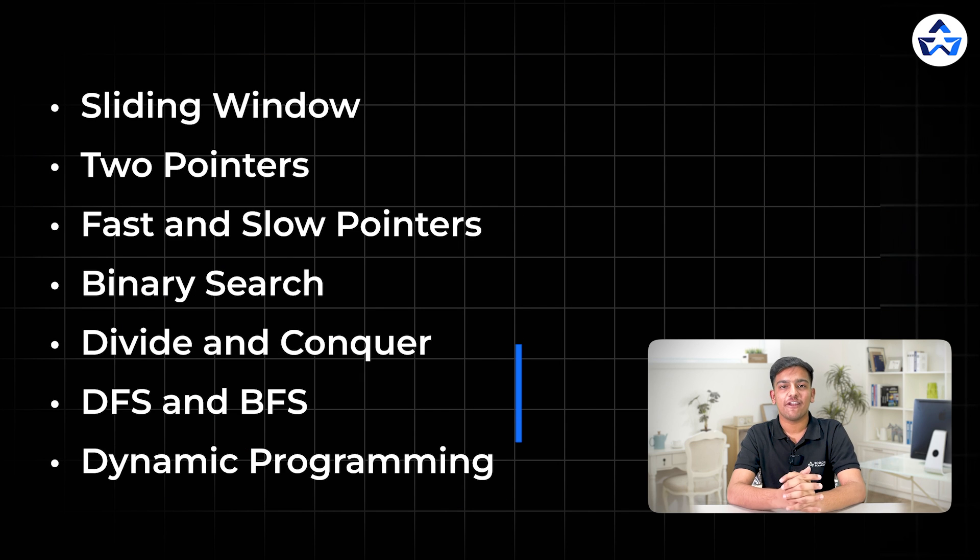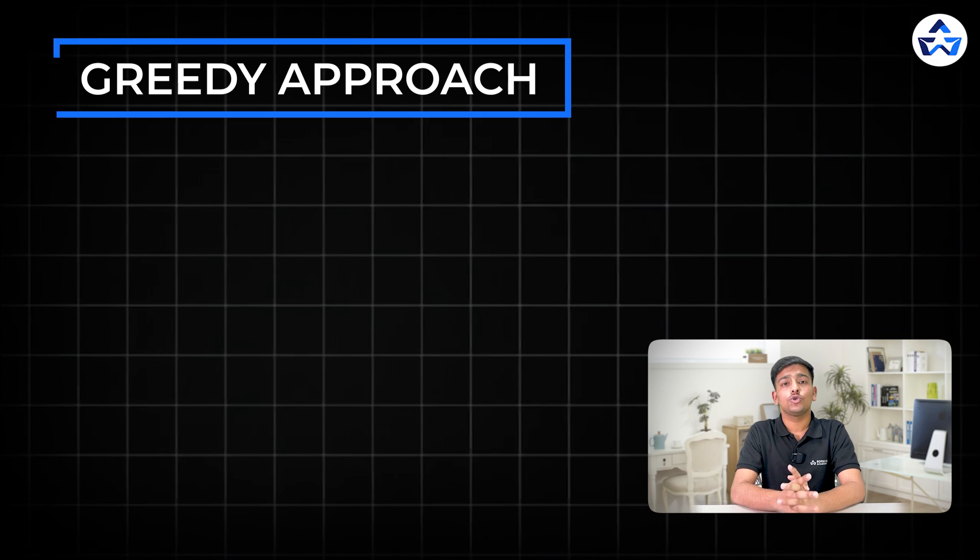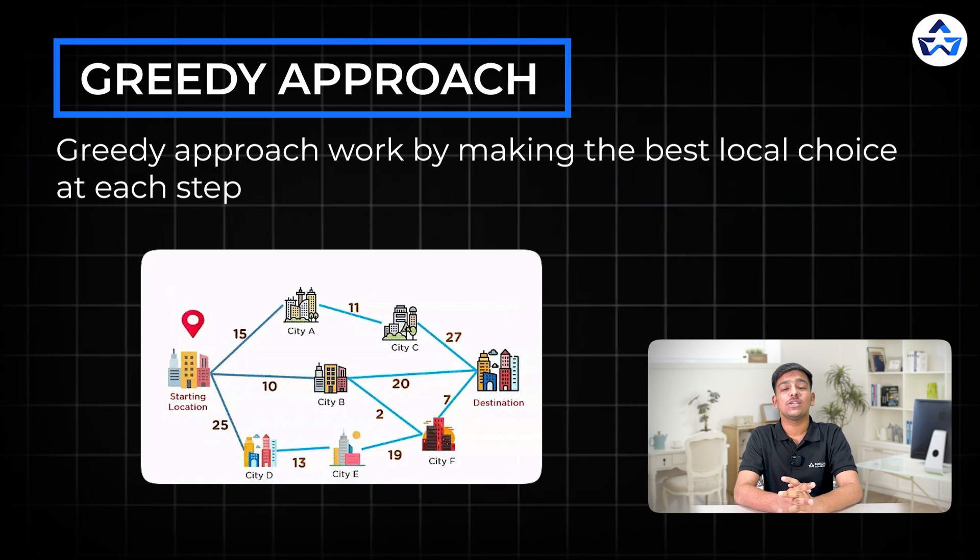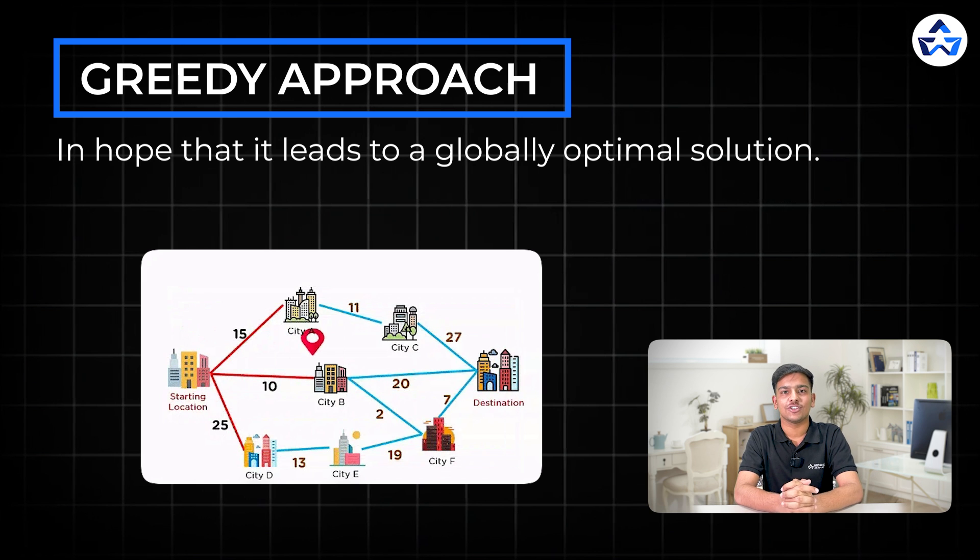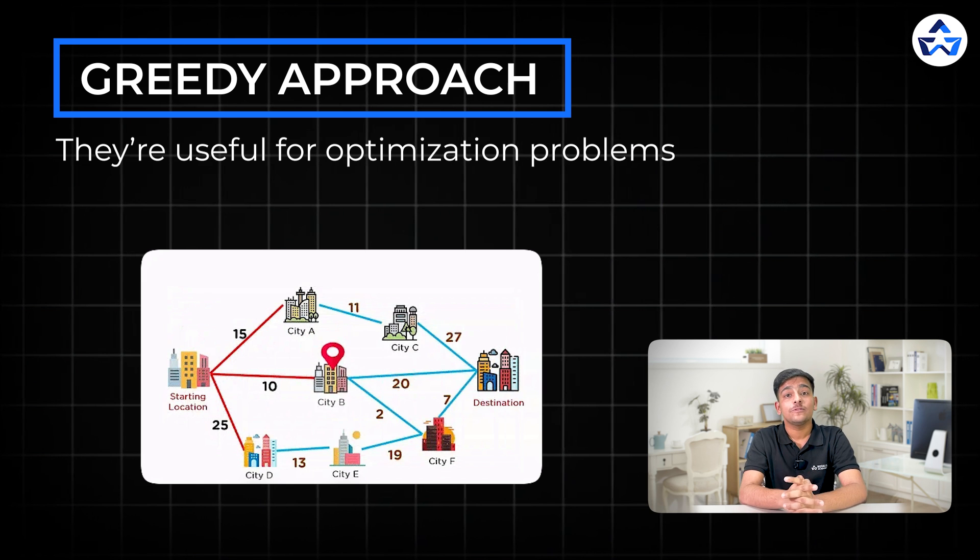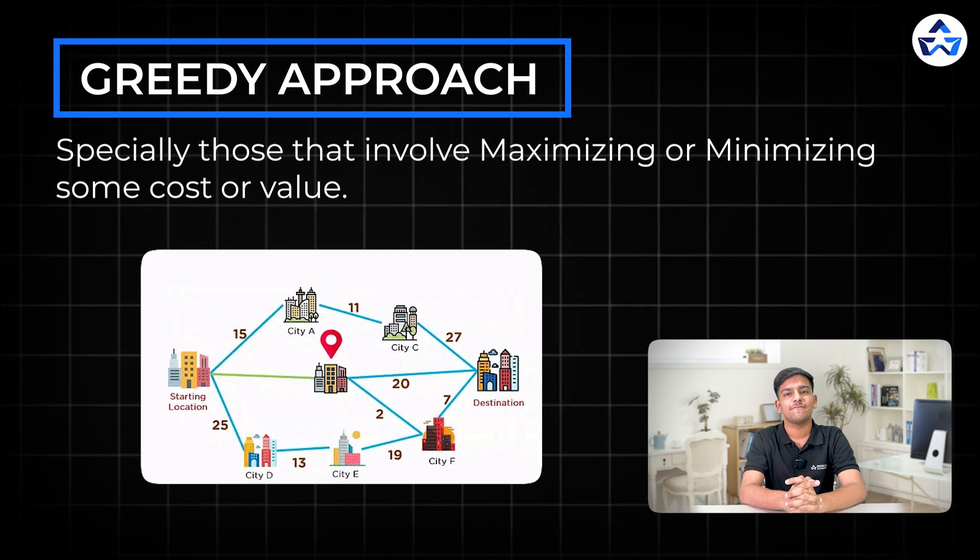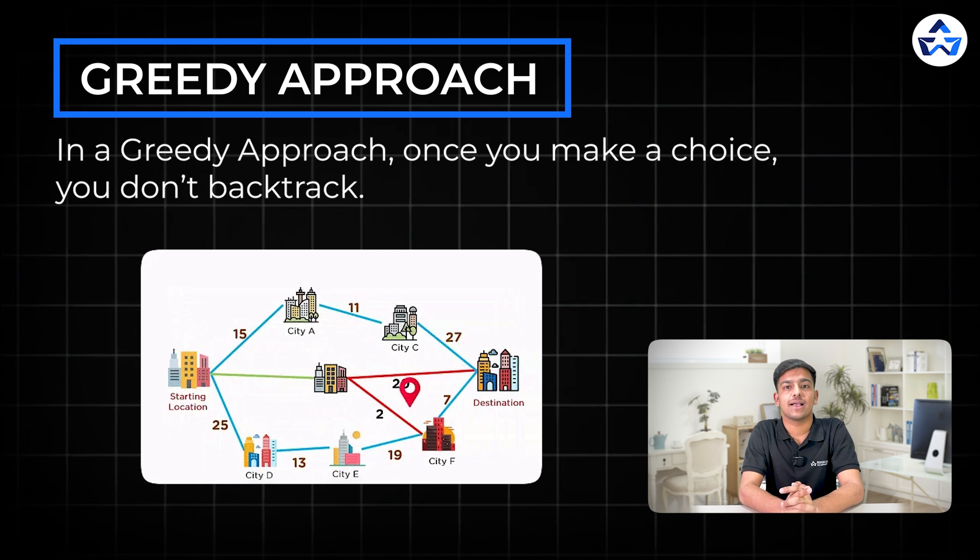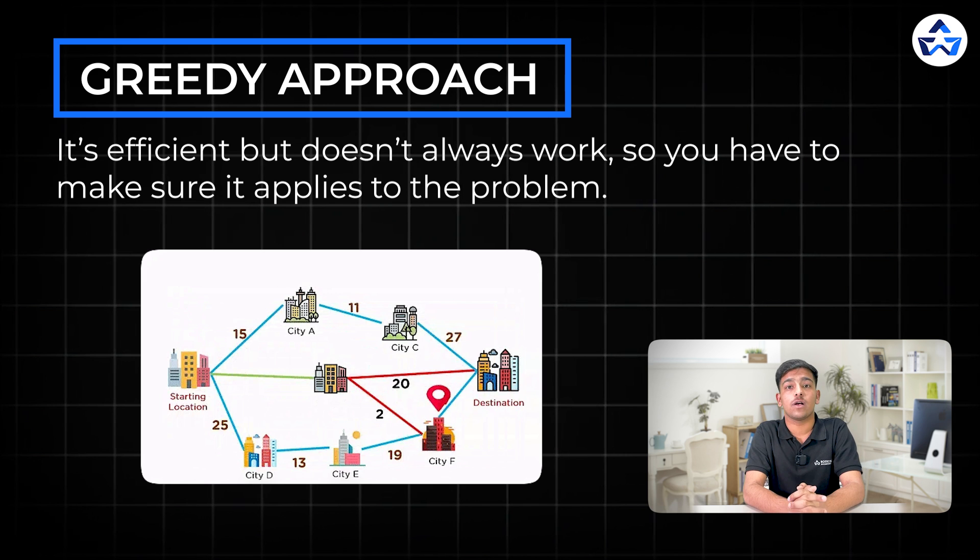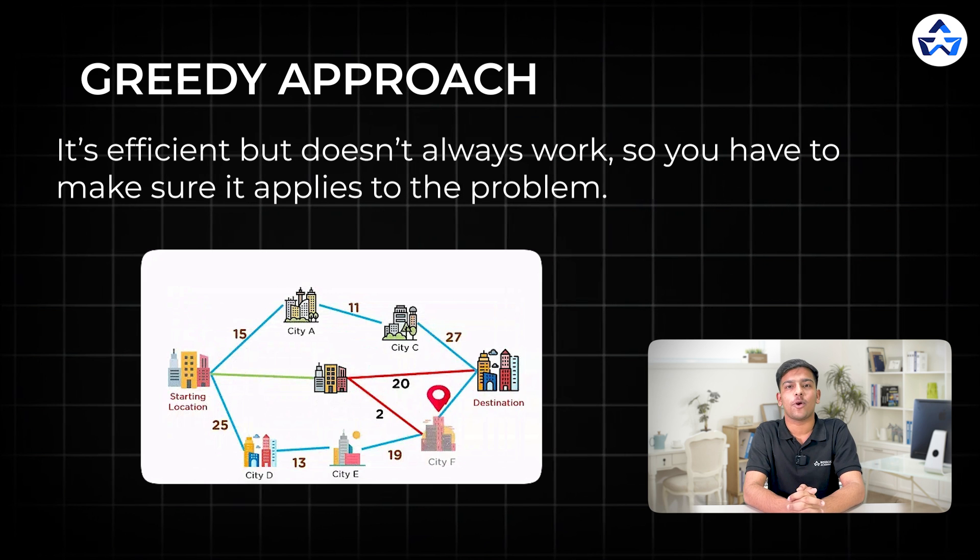So these are the list of patterns that we have discussed so far but I've got one more bonus pattern as well for you which is greedy approach. It works by making the best local choice at each step in hope that it will lead to a globally optimal solution. They are useful for optimizing problems especially those involving maximizing or minimizing some values or costs. In greedy approach once you make a choice you don't backtrack. So it's efficient but doesn't always work. So you have to make sure that it applies to the problem. And at last the related LeetCode question is traveling salesman problem.